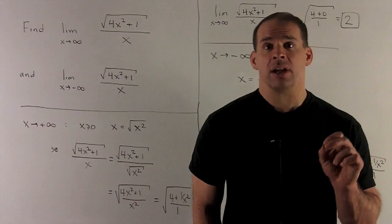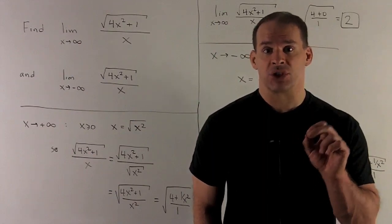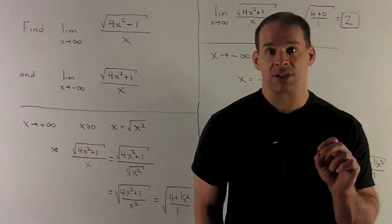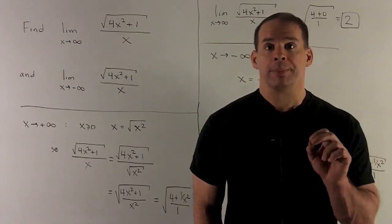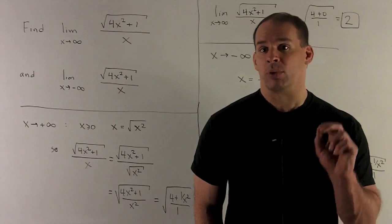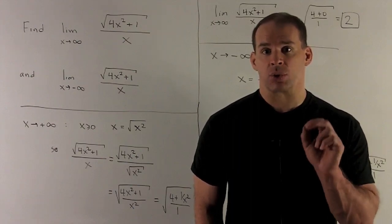So, in this case, square root of x squared is just going to be equal to x because x is positive. Now, I look at my limit. The denominator has an x. I'm going to replace that with square root of x squared.